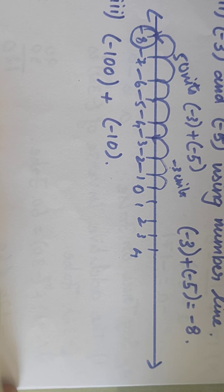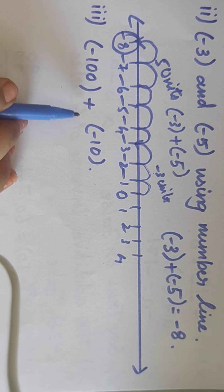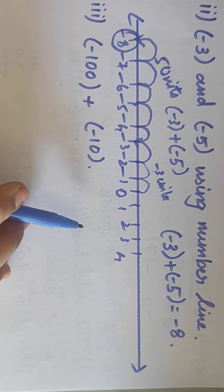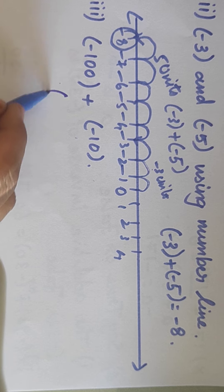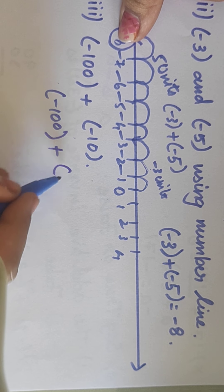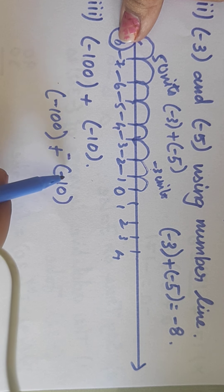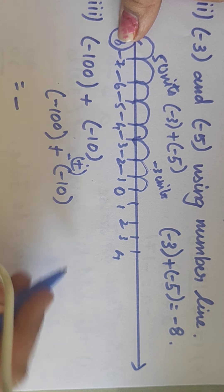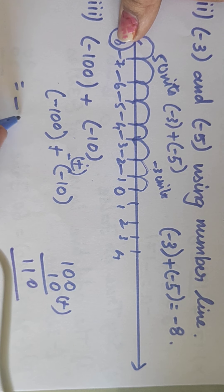Next question: simply adding the numbers. (-100) plus (-10). They didn't say to use a number line, so we can directly give the answer. Minus into plus is minus, minus into minus is plus, so we add. The biggest number is 100, write minus symbol, then add 100 plus 10 equals 110. The answer is minus 110.